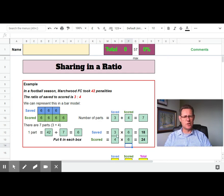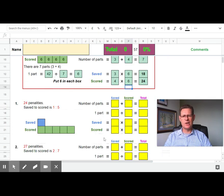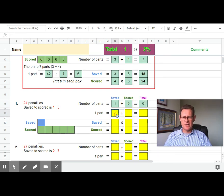Let's have a quick look at this one here. We've got 24 penalties, saved to scored is 1 to 5. The bar model's already drawn, so you're going to start by going one and five equaling a total of six.